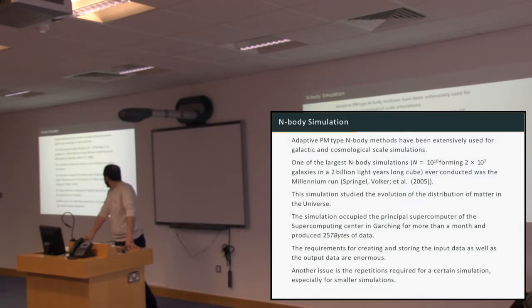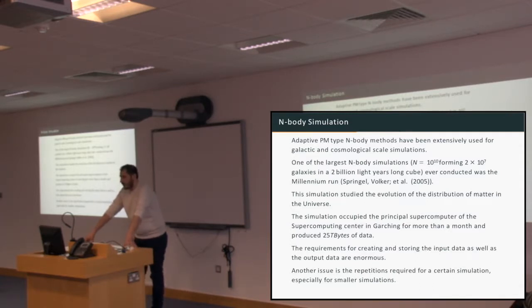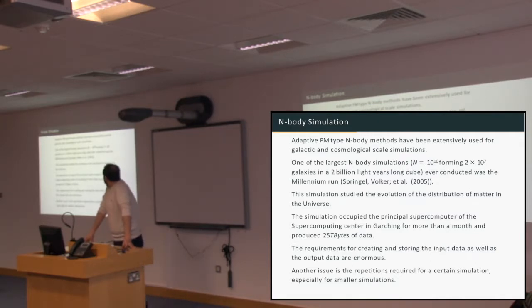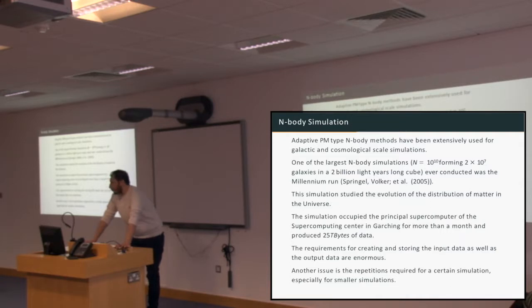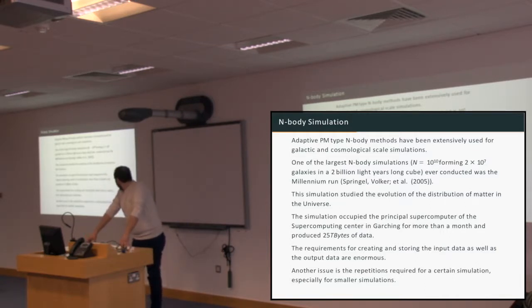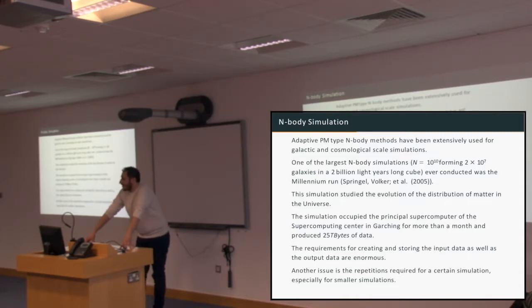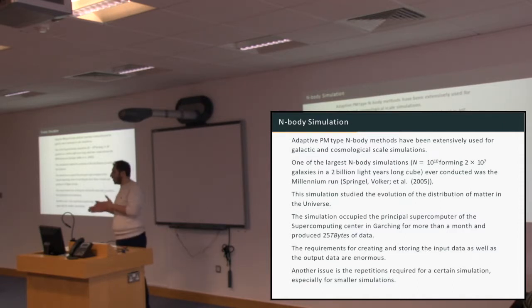These methods can be used for extremely large simulations. The largest one was conducted at the Garching Supercomputing Center in Germany, called the Millennium simulation. It had 10^10 number of bodies, forming two times 10^7 galaxies in a two billion light-year box. The simulation ran for more than a month in the whole supercomputing center, and the output data is on the order of 25 terabytes — just numbers. Moreover, these simulations have to be re-executed multiple times with slightly different inputs so you can study the evolution and how much each parameter affects it.